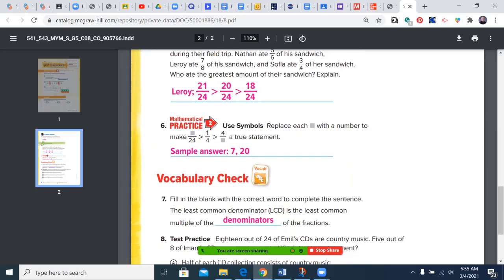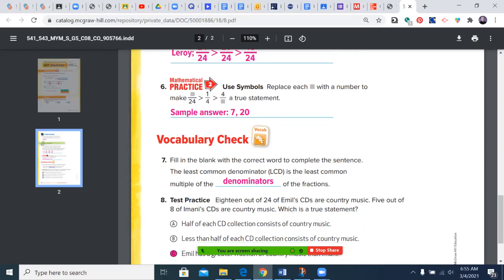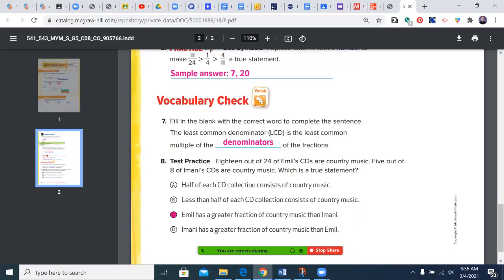You can see the comparison with the three sandwiches, Leroy won. Replace each blank with a number to make a true statement. So I needed to see something greater than six over twenty-four. So seven works here and twenty works over there. But there are a lot of possible answers there. The vocabulary usually comes from the first page of the lesson. The least common denominator is the least common multiple of the denominators of the fractions. And test practice, we found that Emil has a greater fraction of country music than Imani.